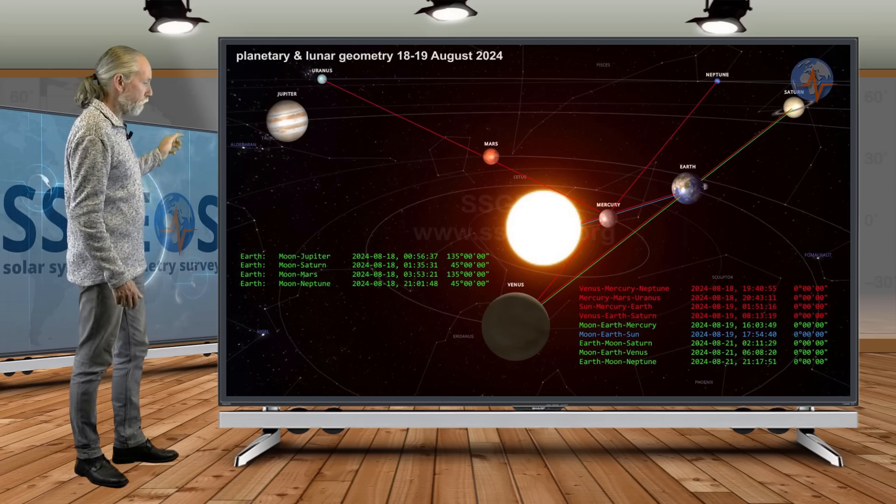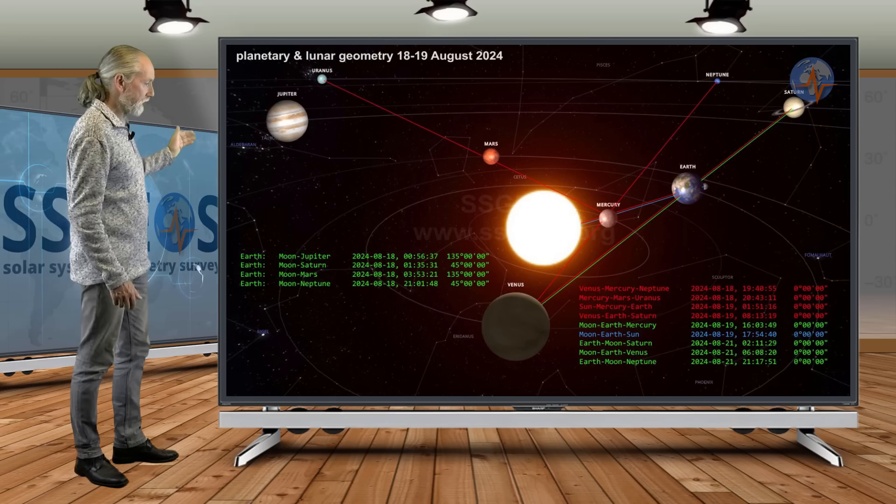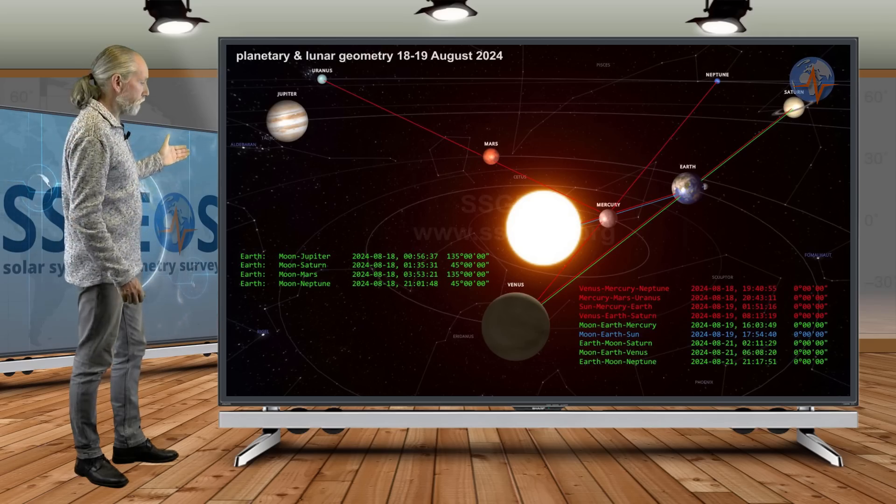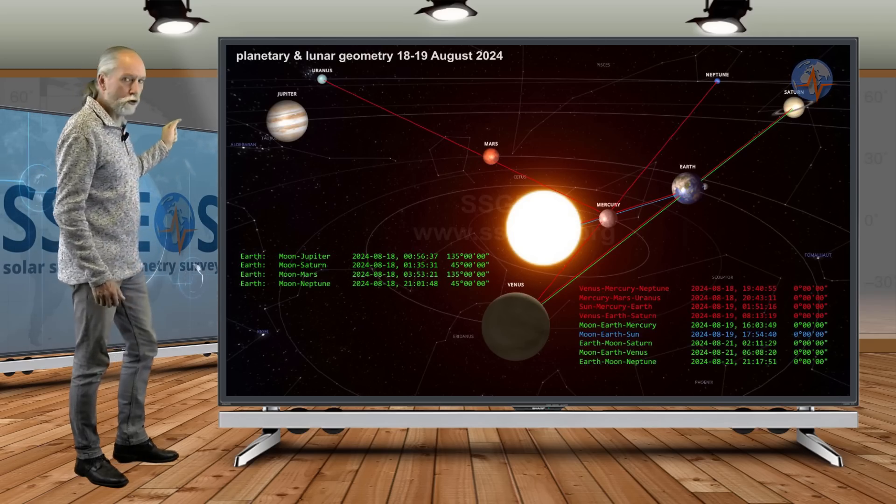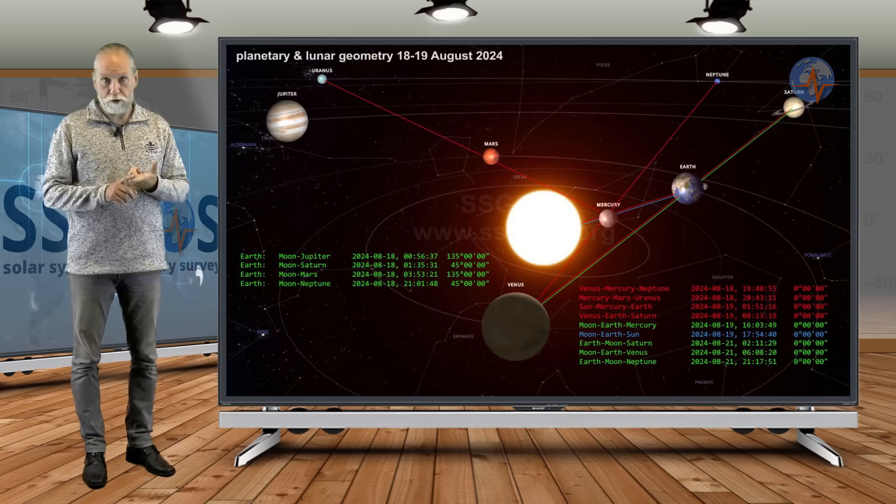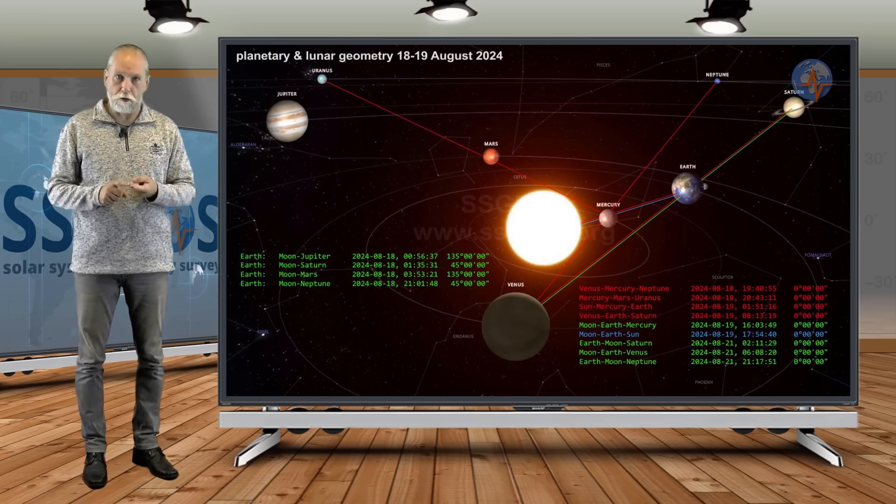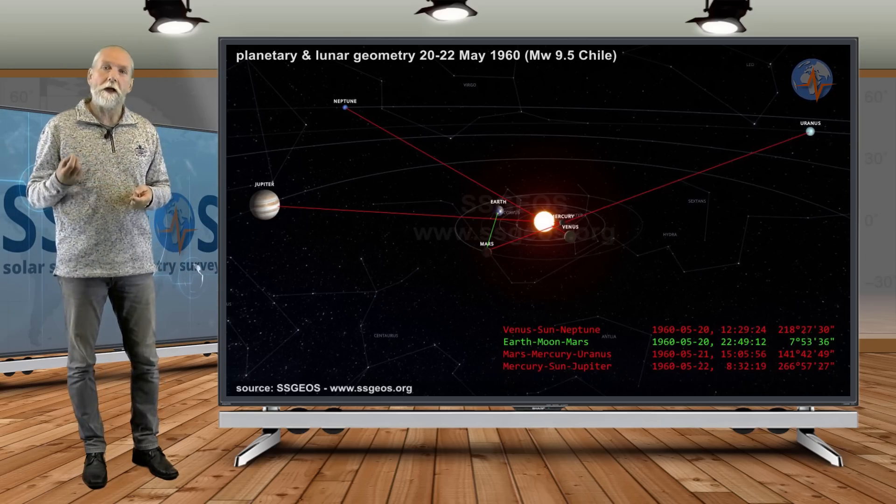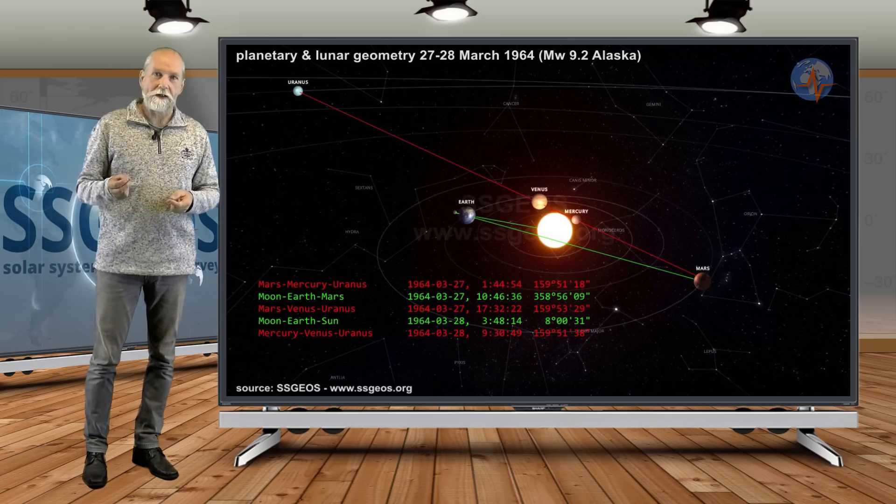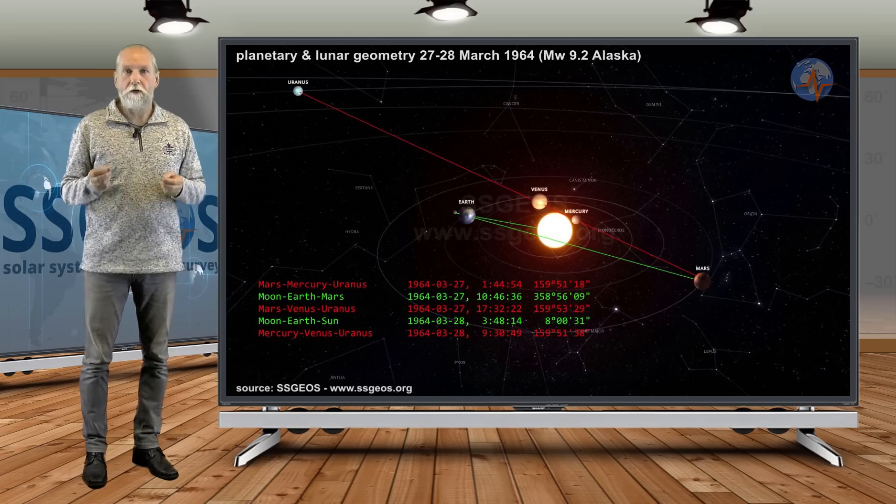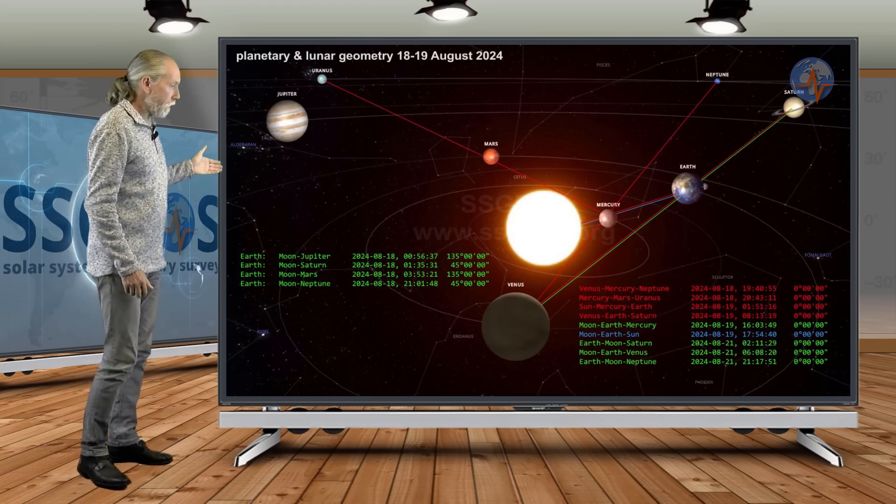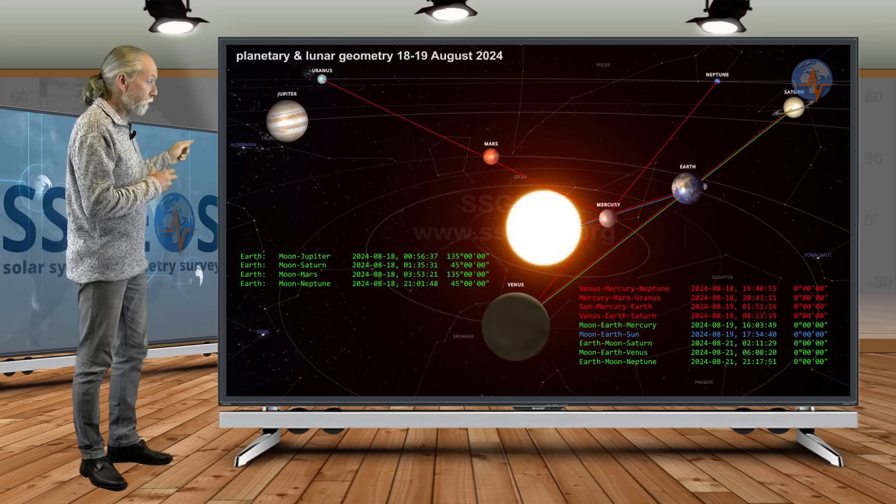In the solar system we see this planetary geometry, these multiple convergences and critical lunar geometry as well, because the moon will be in conjunction opposite Saturn and Venus. But we see here Venus, Mercury, and Neptune. We see Sun, Mercury, and Earth in a conjunction. We see Mercury, Mars, and Uranus in a conjunction. And Mercury, Mars, Uranus in a conjunction—that also happened with the largest earthquakes on the record. In 1960, May 22nd, 9.5, and also in 1964, March 28, 9.2 in Alaska. In both cases we had Mercury, Mars, and Uranus in a conjunction and we have Venus here as well.